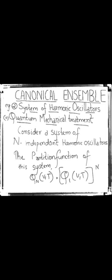Yesterday we dealt with the illustration of canonical ensemble formulation for a system of harmonic oscillators treated classically. Today we are continuing with the quantum mechanical treatment. We consider a system of N independent harmonic oscillators and, as per canonical ensemble theory, we calculate the partition function of the system, from which the complete thermodynamics can be determined.